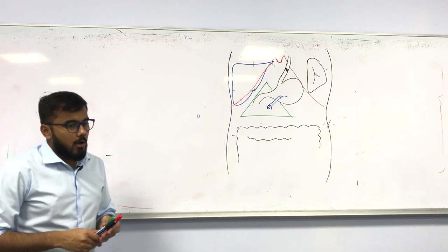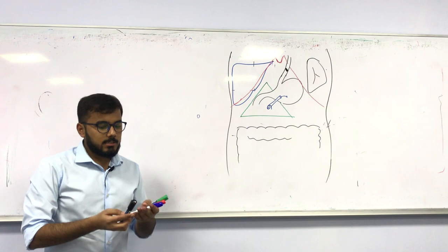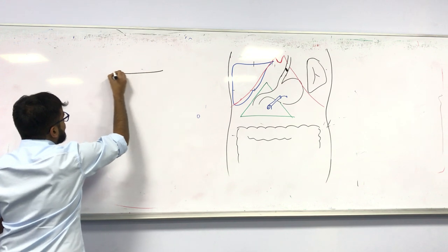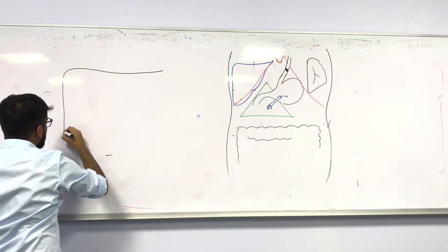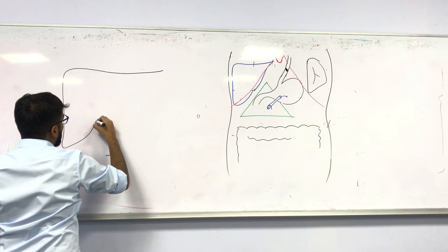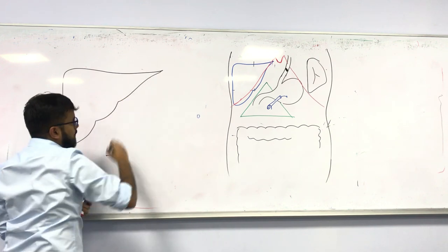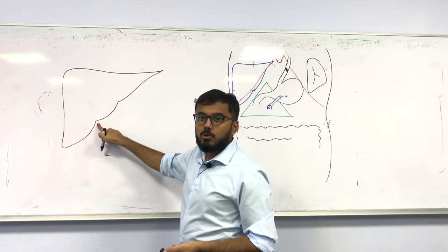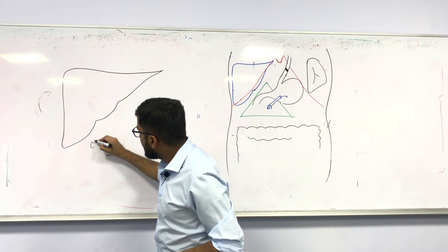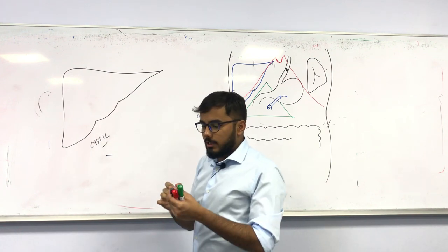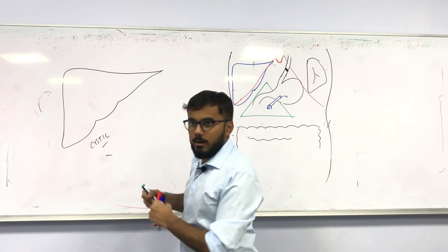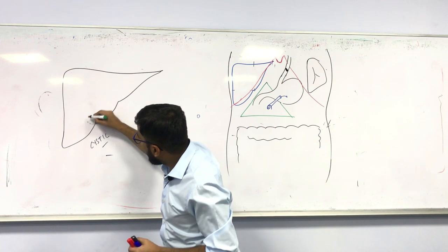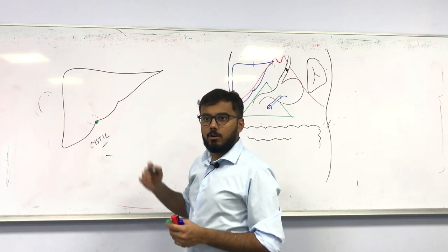When you look at the liver, it has two notches. The first notch is called the cystic notch — it is called so because behind it you have the gallbladder, which is slightly projecting below the liver.